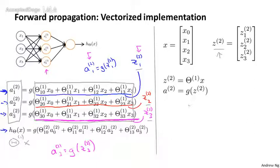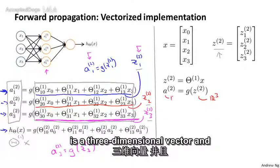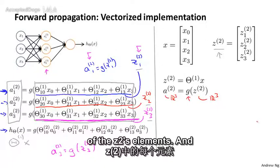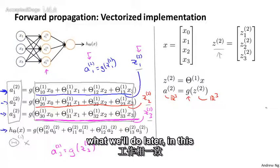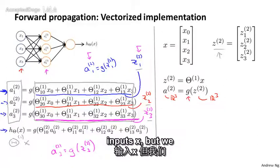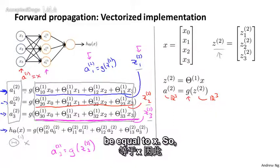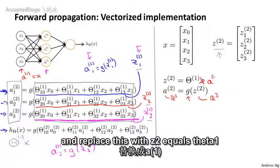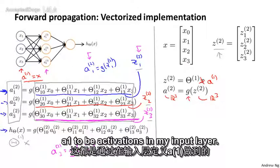And then a2 is g of z2. To be clear, z2 is a three-dimensional vector and a2 is also a three-dimensional vector. This activation g applies the sigmoid function element-wise to each of z2's elements. To make our notation more consistent, we can define a1 to be equal to x — the activations of the input layer — so that z2 equals theta 1 times a1.